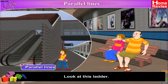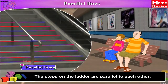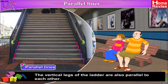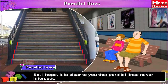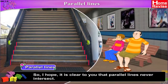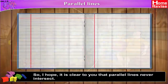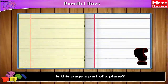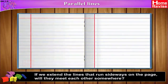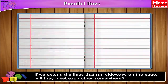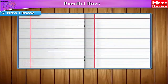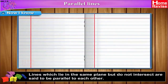Look at this ladder. The steps on the ladder are parallel to each other. The vertical legs of the ladder are also parallel to each other. So, I hope it is clear to you that parallel lines never intersect. Look at this page from a notebook — is this page a part of a plane? If we extend the lines that run sideways on the page, will they meet each other somewhere? Now I know: lines which lie in the same plane but do not intersect are said to be parallel to each other.